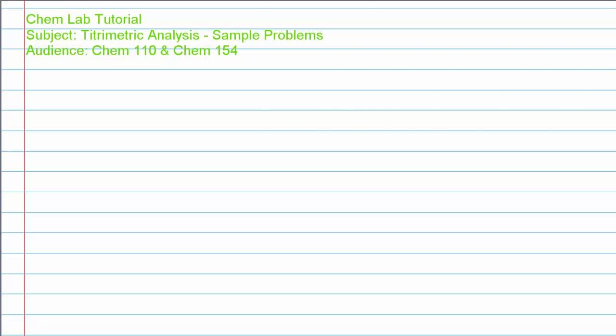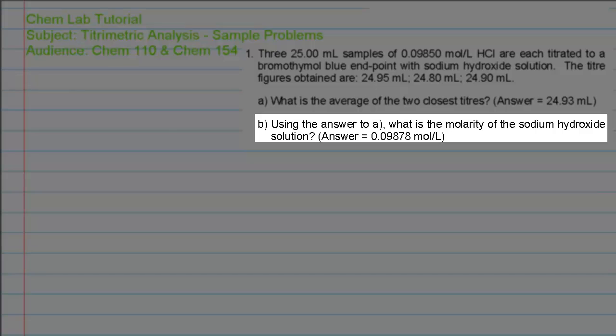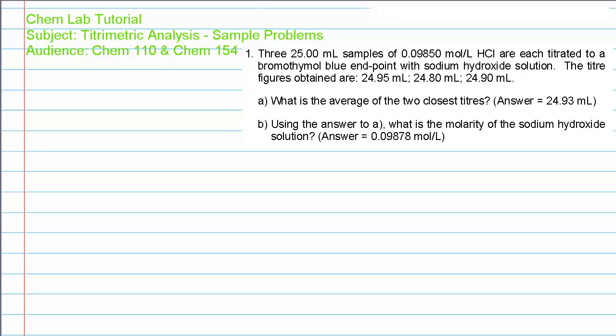This short tutorial deals with problem number 1b in the study guide for the CHEM 110 titrametric analysis experiment. It can be found in the CHEM 110 lab manual. If you're a CHEM 154 student, this tutorial may also be applicable, although the problem could be slightly different.